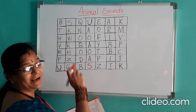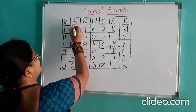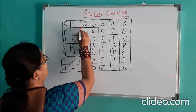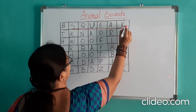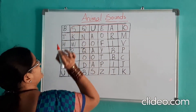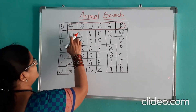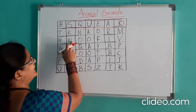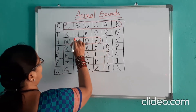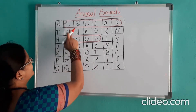Here you have to identify the sound of some animals. From the second box, the mouse — squeak. S-Q-U-E-A-K. Squeak. Next, coming to the third line, the dog — woof. W-O-O-F. Woof.